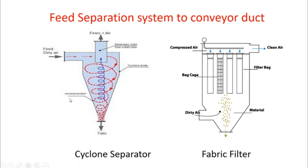After feeding, the material is conveyed through the conveyor duct and received at the discharge end. If the particle size and density are large, a simple separation mechanism is used. If particles are less dense, a cyclone separator is used to separate fine particles from the air stream. In very rare cases, fabric filters are used to separate very fine particles or flour from the air stream.